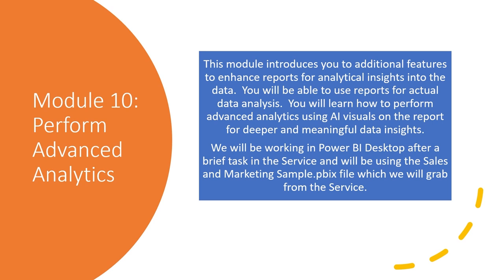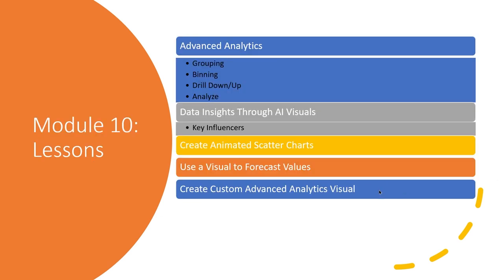In Module 10, you'll learn how to perform advanced analytics on your reports. You'll be introduced to report features that perform analytical insights into the data, and learn how to perform advanced analytics using AI visuals for deeper and meaningful data insights. We'll work in Power BI Desktop after a brief task in the service, using the Sales and Marketing Sample desktop file. We'll start with advanced analytics features like grouping, binning, drill down and up, and analyze. We'll then move on to using the Key Influencers AI visual, creating an animated scatter chart, using a visual to forecast values, and creating a custom advanced analytics visual.